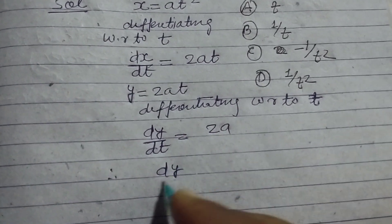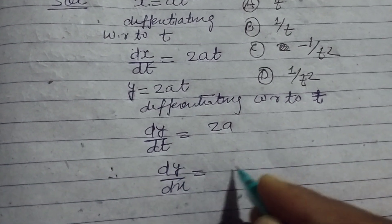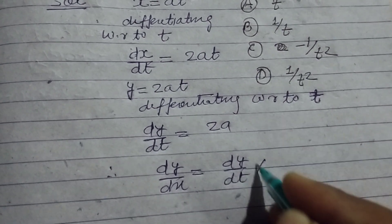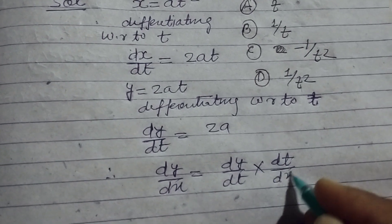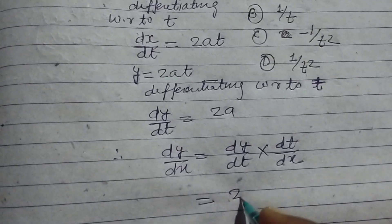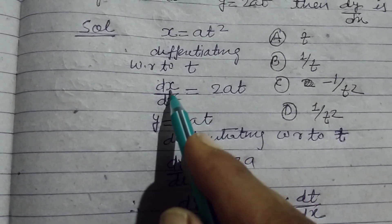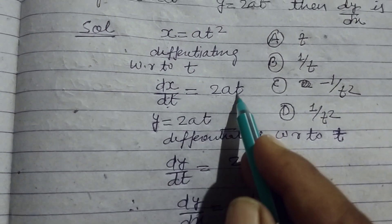And dy/dx equals dy/dt times dt/dx. So dy/dt is 2a, and dx/dt is 2at.